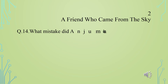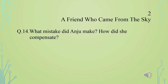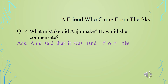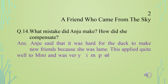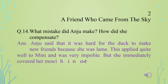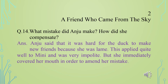Question 13: What change did the bird bring in the attitude of the neighborhood children towards Minnie? Answer: The neighborhood children became very friendly with Minnie. Question 14: What mistake did Anju make? How did she compensate? Anju said that it was hard for the duck to make new friends because she was lame. This applied quite well to Minnie and was very impolite, but she immediately covered her mouth in order to amend her mistake.